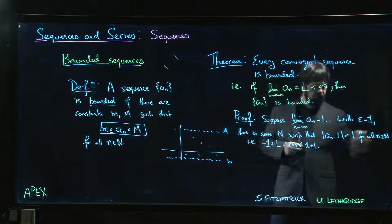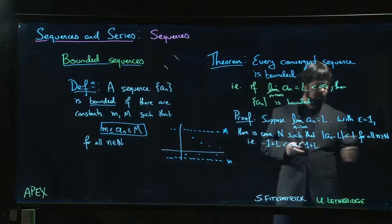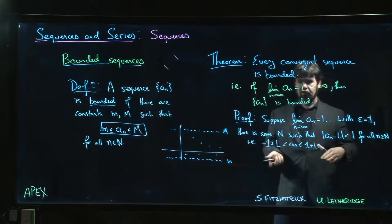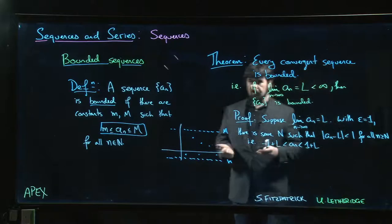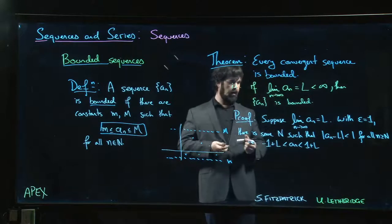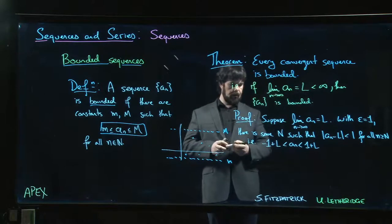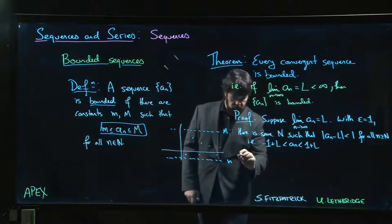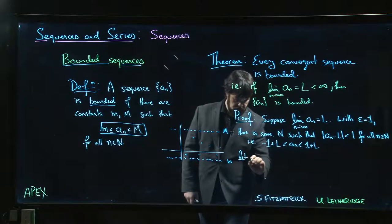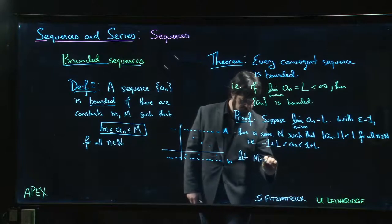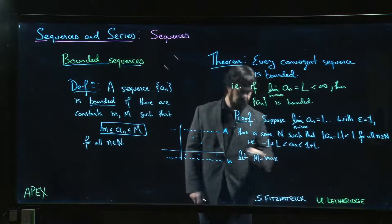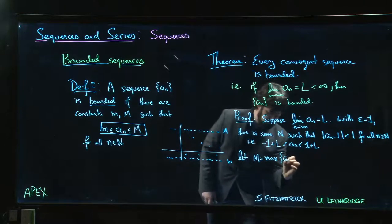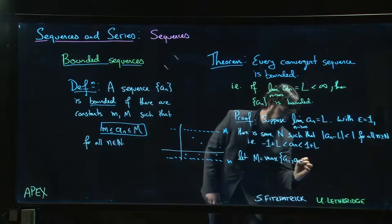But only for those values of n that are bigger than or equal to this capital N. What about the ones that came before? Well, the ones that came before are a finite list. So basically what we do is we're going to let big M be the maximum of all the numbers a_1, a_2,